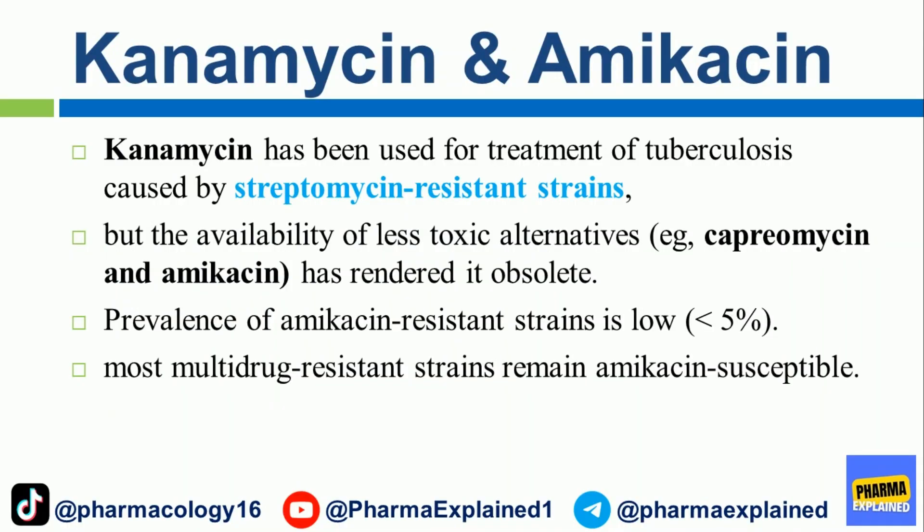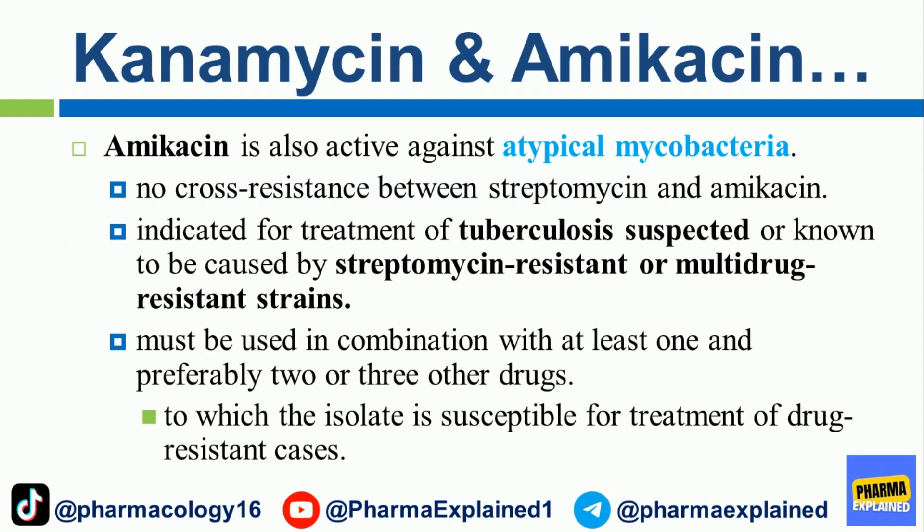Kanamycin has been used for treatment of tuberculosis caused by streptomycin-resistant strains, but the availability of less toxic alternatives such as capreomycin and amikacin has rendered it obsolete. The prevalence of amikacin-resistant strains is low, less than 5%, and most multi-drug-resistant strains remain amikacin-susceptible. Amikacin is also active against atypical mycobacteria, with no cross-resistance between streptomycin and amikacin. It is indicated for treatment of tuberculosis suspected or known to be caused by streptomycin-resistant or multi-drug-resistant strains, and must be used in combination with at least one and preferably two or three other susceptible drugs.